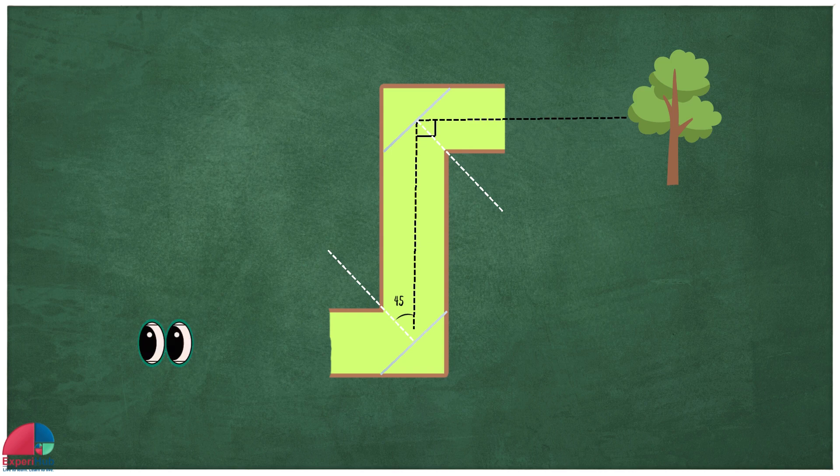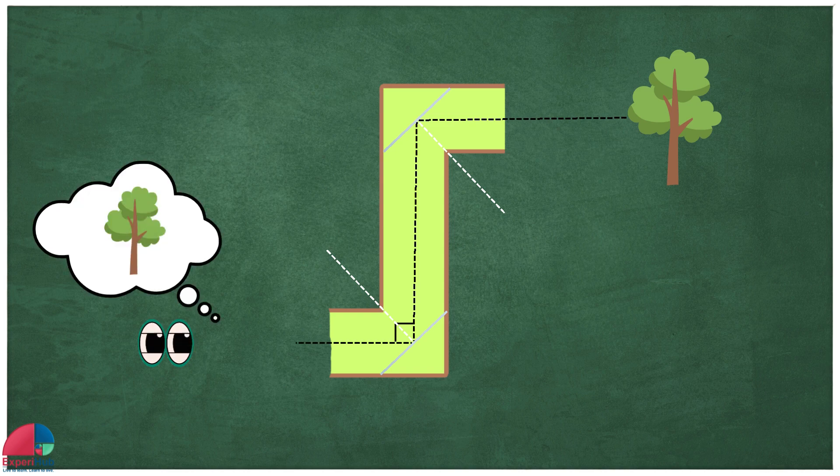The light then travels down to the bottom mirror, which is also at a 45 degree angle, and reflects the light again by 90 degrees, sending it straight to your eye.